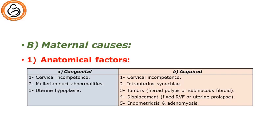Second are the maternal causes. We have anatomical factors which could be congenital, like cervical incompetence, Müllerian duct anomalies, uterine hypoplasia, or acquired conditions like acquired cervical incompetence, intrauterine adhesions or synechiae, tumors, fibroids, polyps, or submucous fibroids, displacement of the uterus like retroverted fixed uterus or uterine prolapse, endometriosis, and adenomyosis.